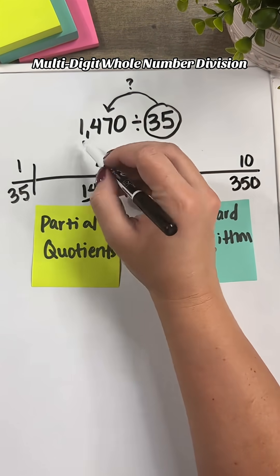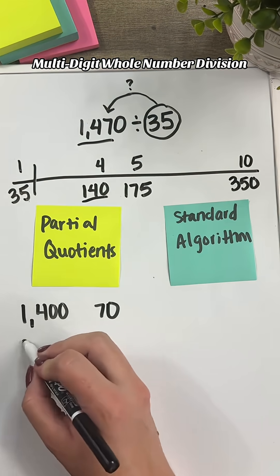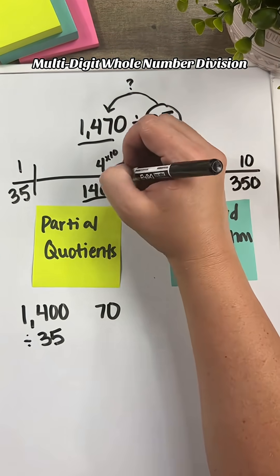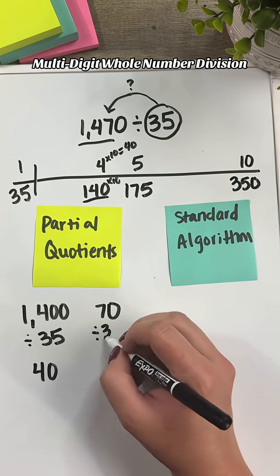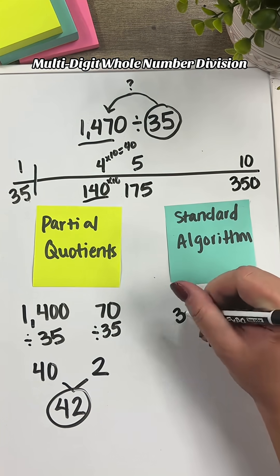Let's decompose our dividend into numbers that are easier to divide by 35. We can use 1,470. We can use that same table to show our multiples of 10. This way, we'll have 40 and 2 as my partial quotients.